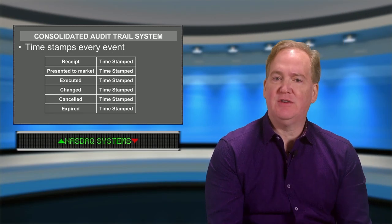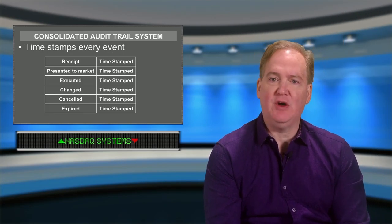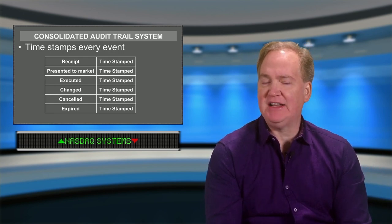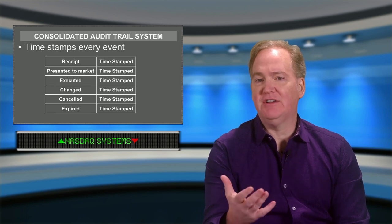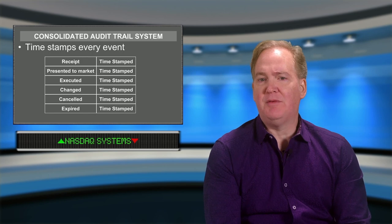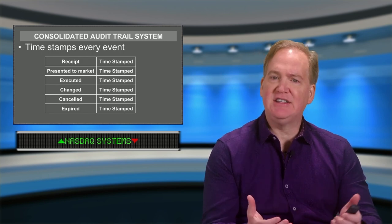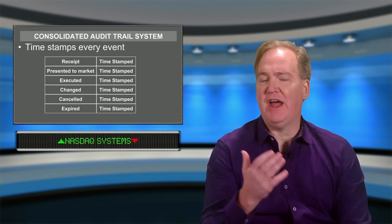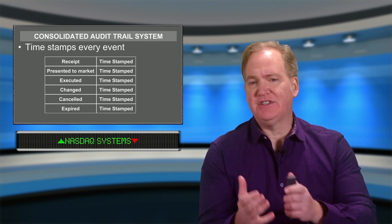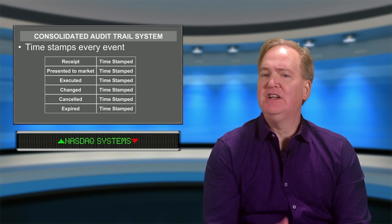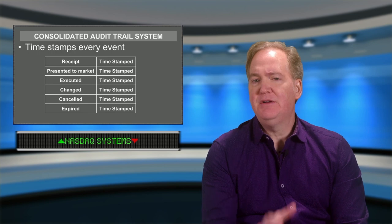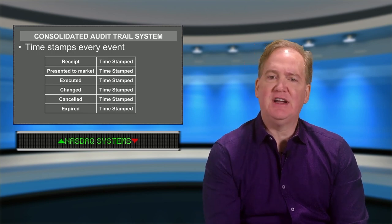The Consolidated Audit Trail System, or CATS, replaced the old OATS system and operates in a similar capacity with several subtle differences. CATS includes information on orders received for both equities and option orders. There have also been several subtle changes made to some of the timing and reporting requirements, which we're going to go through in just a few seconds.